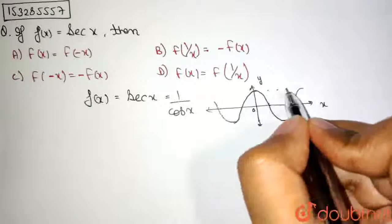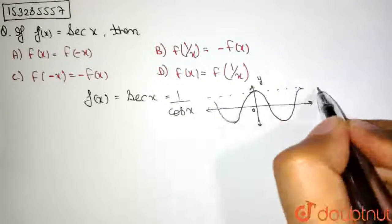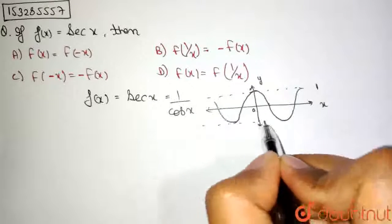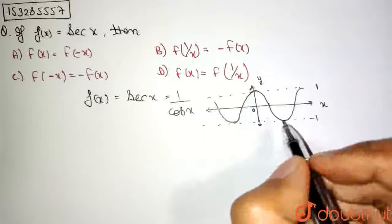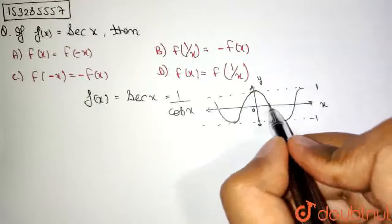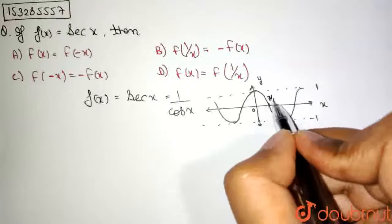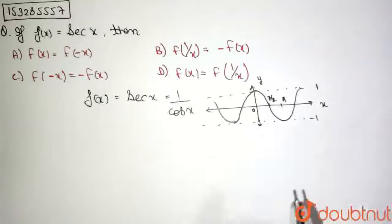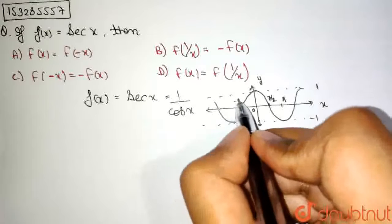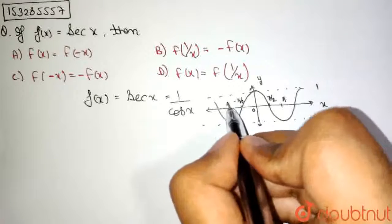At 0, it attains the value of maxima. It has maxima of 1, it has minima of minus 1. At 0, it attains the maxima. And then, at pi by 2, it again reaches 0. And at pi, it again goes to maxima, and so on. And on this side also, it is minus pi by 2 and pi.